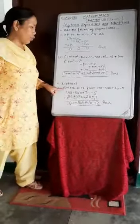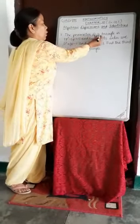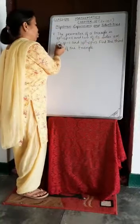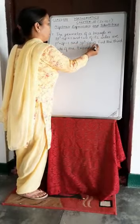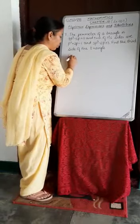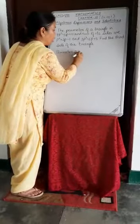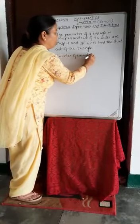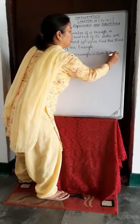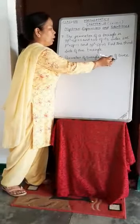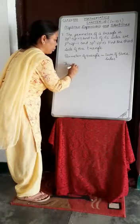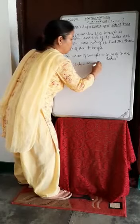Now I am explaining question number 7 of the same exercise. The perimeter of a triangle is 7P² minus 5P plus 11, and 2 of its sides are P² plus 2P minus 1 and 3P² minus 6P plus 3. Find the third side. The perimeter of a triangle equals the sum of its 3 sides, so the third side equals the perimeter minus the sum of the two given sides.